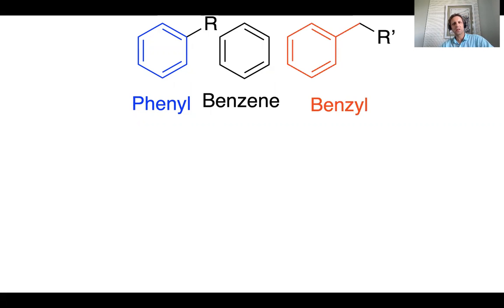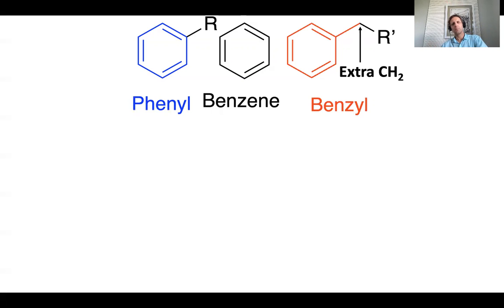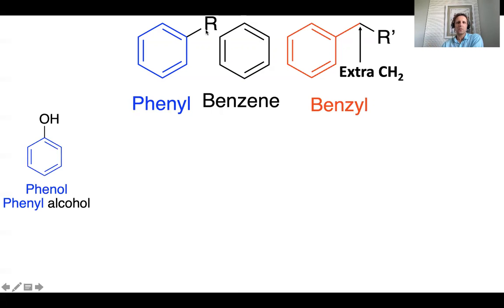A benzyl substituent looks very similar. The difference is there's an extra CH₂ group between the benzene ring and the rest of the molecule, represented here by R'. So: phenyl means the benzene ring is directly attached to the parent molecule; benzyl means there's the benzene ring and then the extra CH₂ group in between.